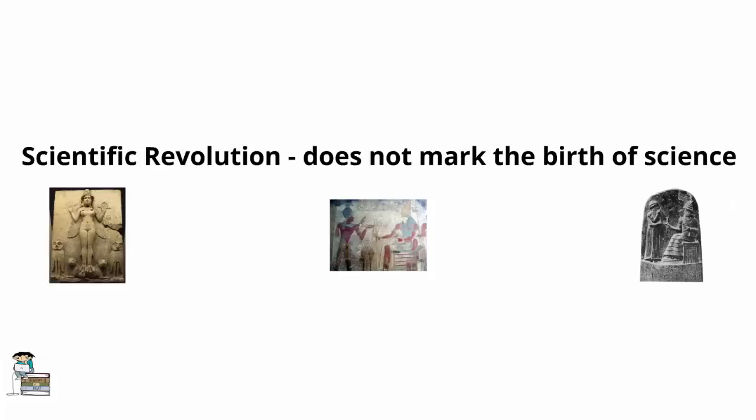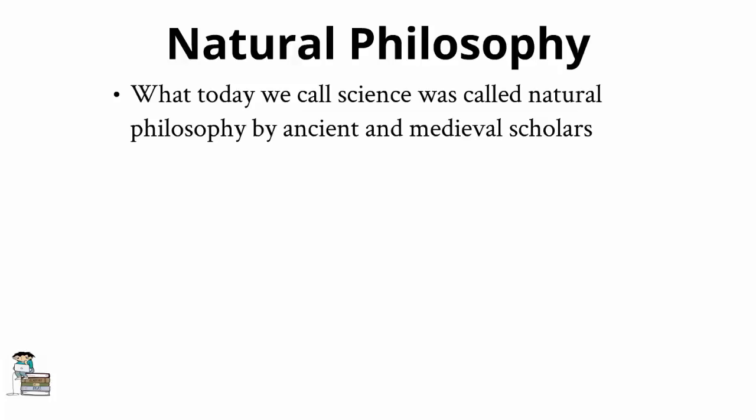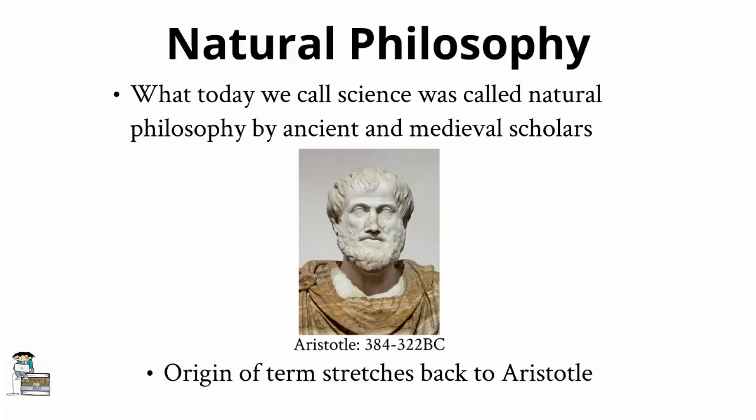It should also be noted that the term science did not gain its modern meaning until the 19th century. Prior to that time and thus during the Scientific Revolution, the term natural philosophy or philosophy of nature was used to designate what today we would call science. Natural philosophy is a term with roots stretching back to Aristotle in ancient Greece. Ancient and medieval scholars used the term to signify investigations into the natural world and the material causes of natural phenomena.